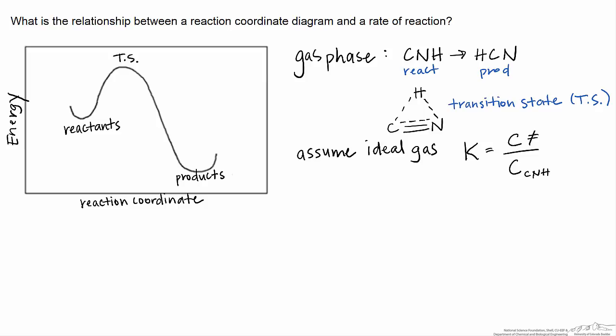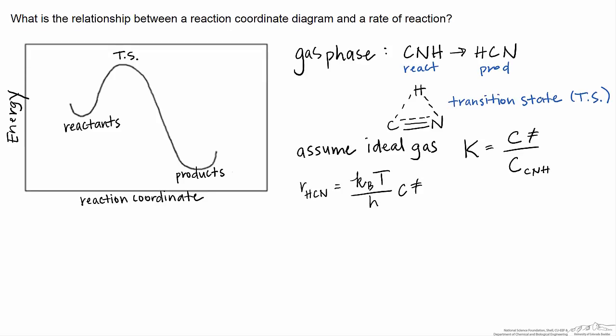The approach in transition state theory is that we're going to determine the rate of product formation in terms of some kind of rate constant times the concentration of the transition state. That rate constant takes this particular form, it's often called the crossing frequency, where we multiply Boltzmann's constant times the temperature over h times the concentration of the transition state.